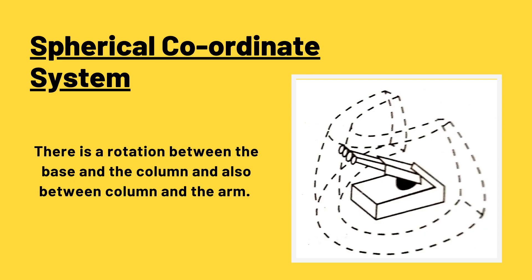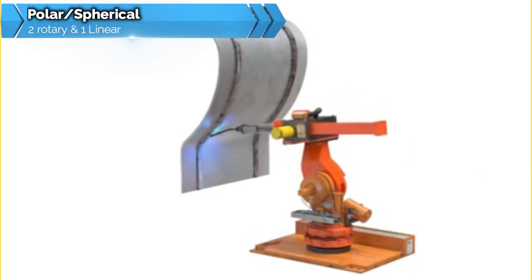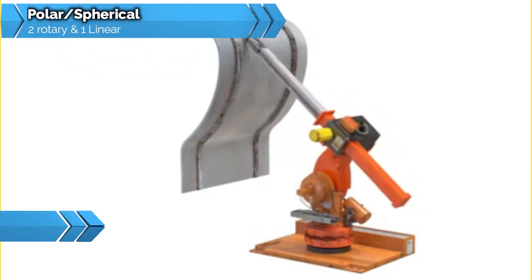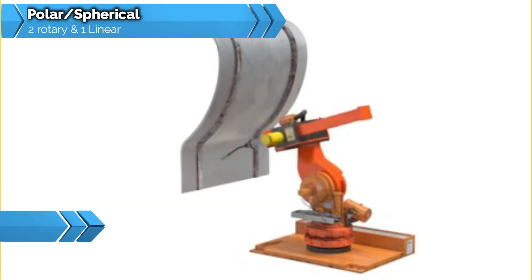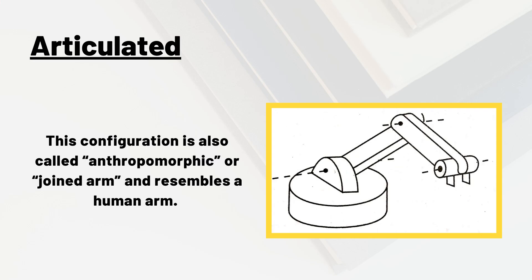Third, we have polar or spherical type of configuration. Here we have two rotary motions and one linear motion of the robot. There is a rotation between the base and the column, and also between the column and the arm. The linear motion is given by the sliding joint on the arm. This kind of configuration is used in spot welding, gas welding, arc welding, and machine loading operations.